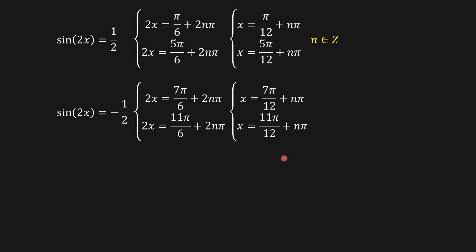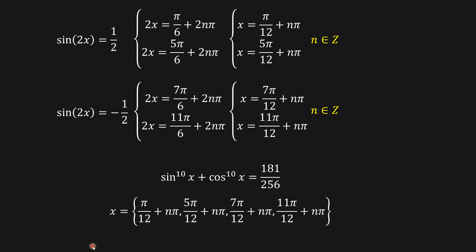For the second case dividing by 2, we get additional solutions. So for the problem sin¹⁰x + cos¹⁰x = 181/256, the general solutions are: x = π/12 + nπ, x = 5π/12 + nπ, and the two corresponding negative-case solutions, where n belongs to the integers. Please subscribe to the channel and let me know in the comments what you think about the method used. See you in the next video!